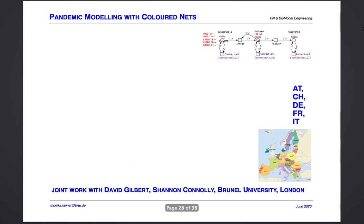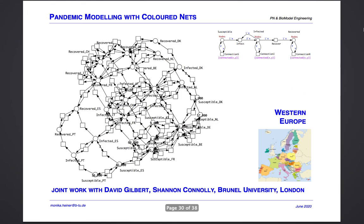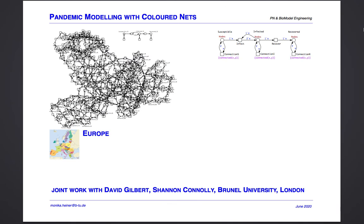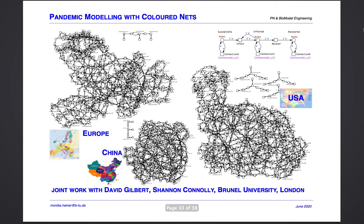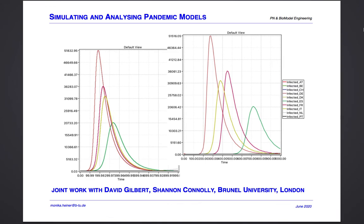Now our model is ready, and by automatic unfolding we get what we were looking for: the pandemic model for the five countries considered. We can replace the color sets implementing the connectivity graph — for example by ten countries, entire Europe, China, or the USA. So we have one colored model serving as a template, and the only thing which needs to be changed are the color sets and the initial marking. Now we are ready to simulate our pandemic models and to explore their behavior.